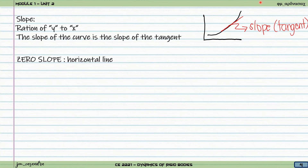For our slope types, we have a zero slope, which means it is a horizontal line. For our velocity, if the slope of the x-t curve is horizontal, then the velocity is zero. Likewise, for our v-t curve, if the slope is horizontal, it means that the acceleration is equivalent to zero.